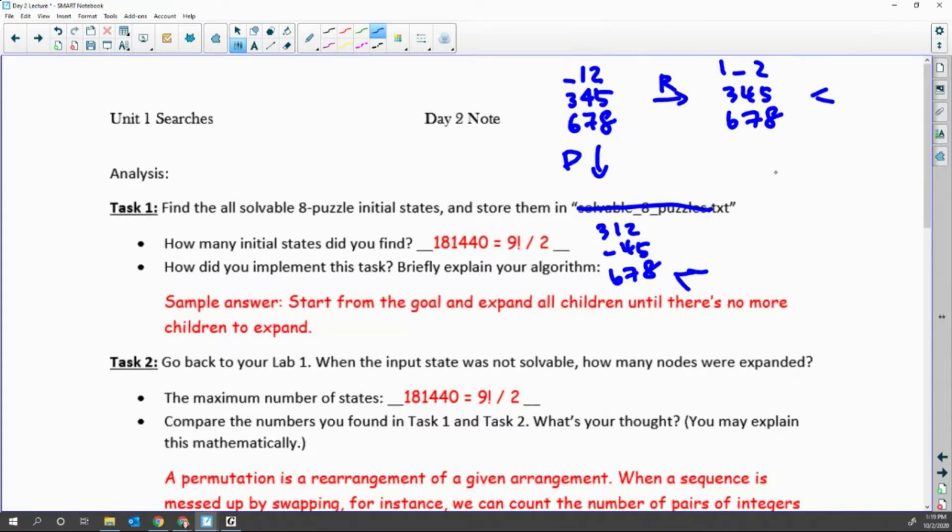You probably want to use a set like explored or visited. Then if you cannot add any node to the explored or visited anymore, then you are done. When you count all of them, all the possible things, you are gonna see 181,440.